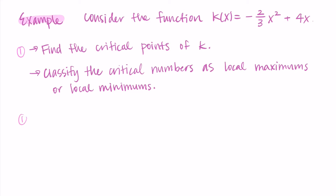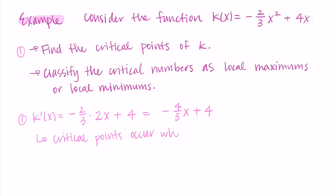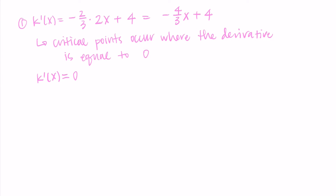Critical points occur when the derivative is equal to zero or undefined. First, we find the derivative. For the first term, -⅔ times the derivative of x², which is 2x, gives -4/3 x. Then we add the derivative of 4x, which is 4. So k'(x) = -4/3 x + 4. To find critical numbers, we set this equal to zero: -4/3 x + 4 = 0.